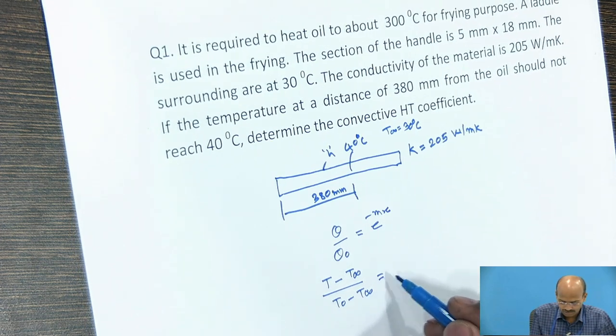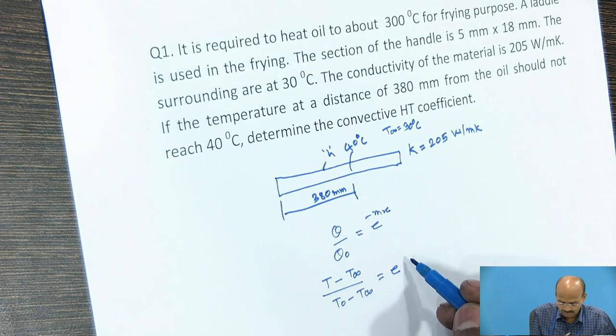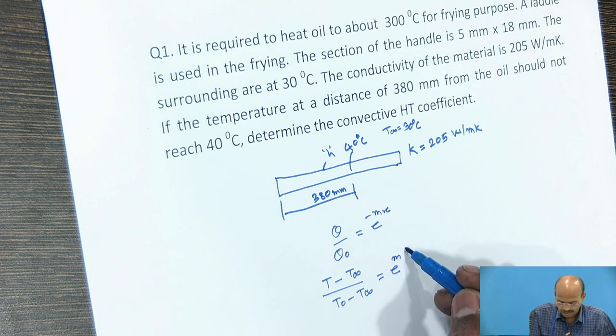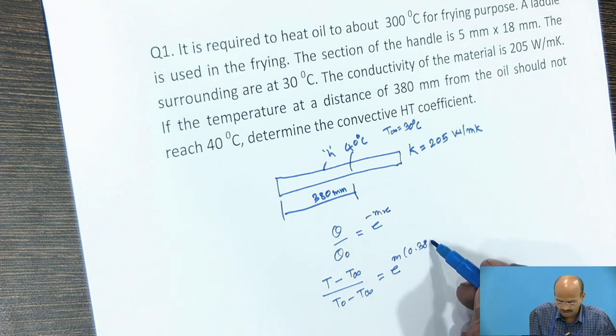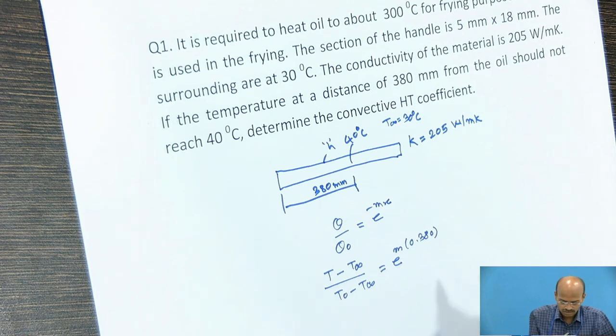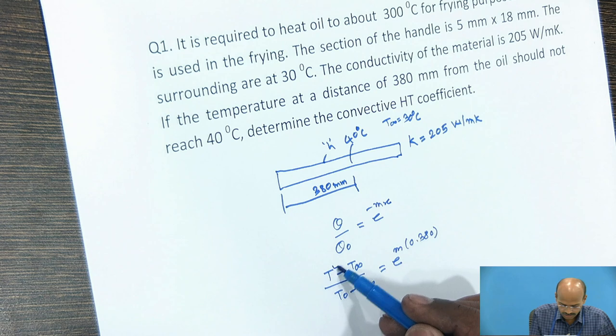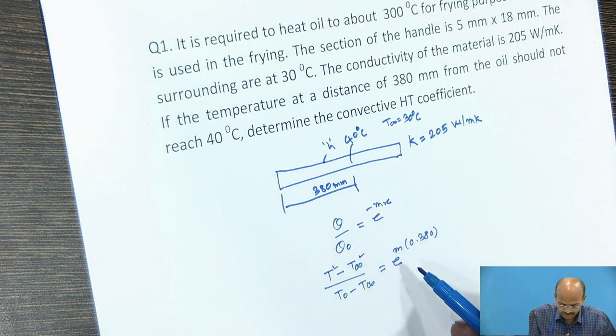Which is equal to e raised to M, and x is 0.380 meter. Now here we can substitute T, T infinity, T naught, T infinity.